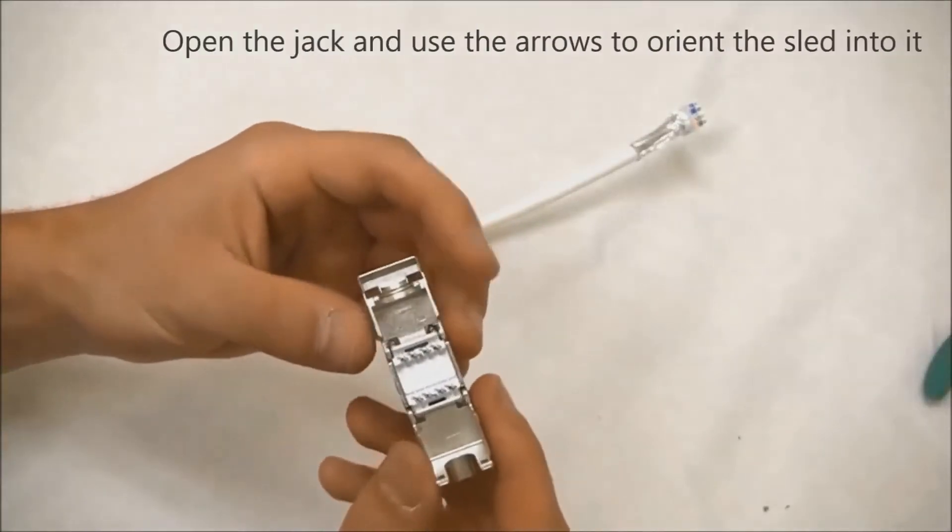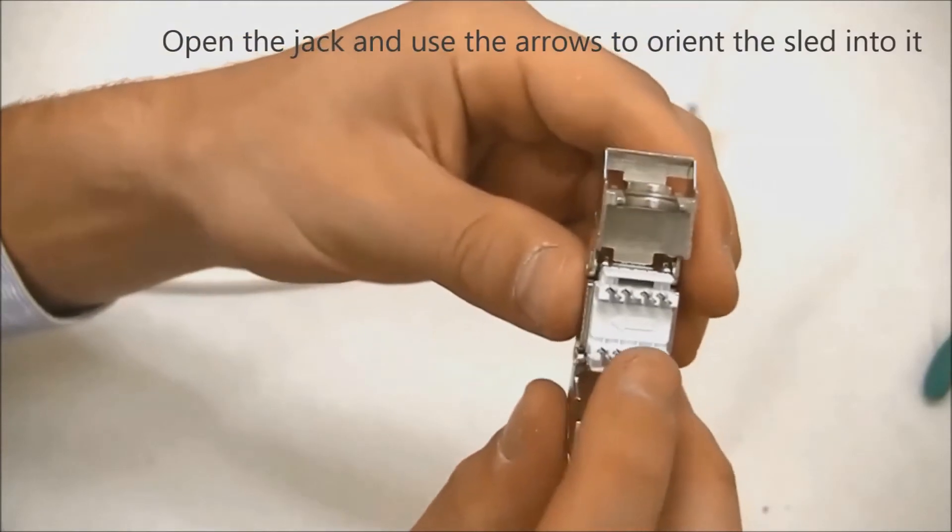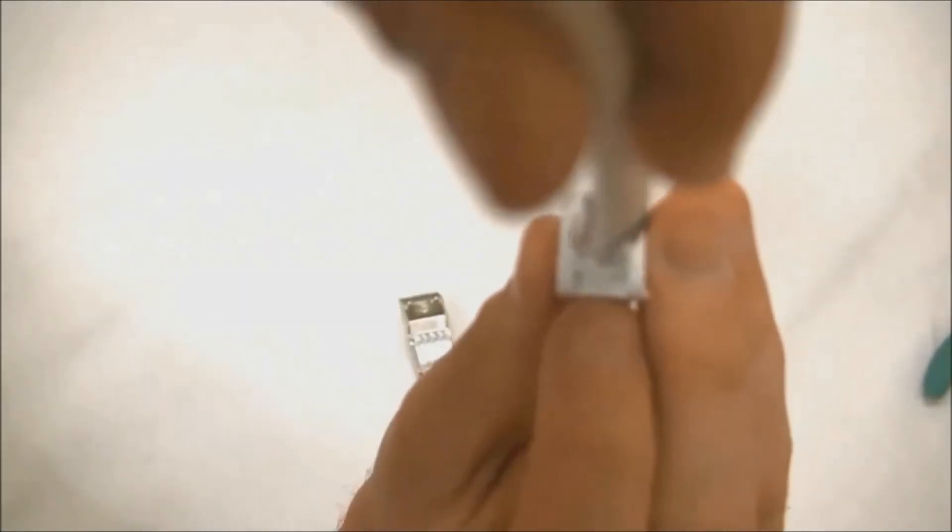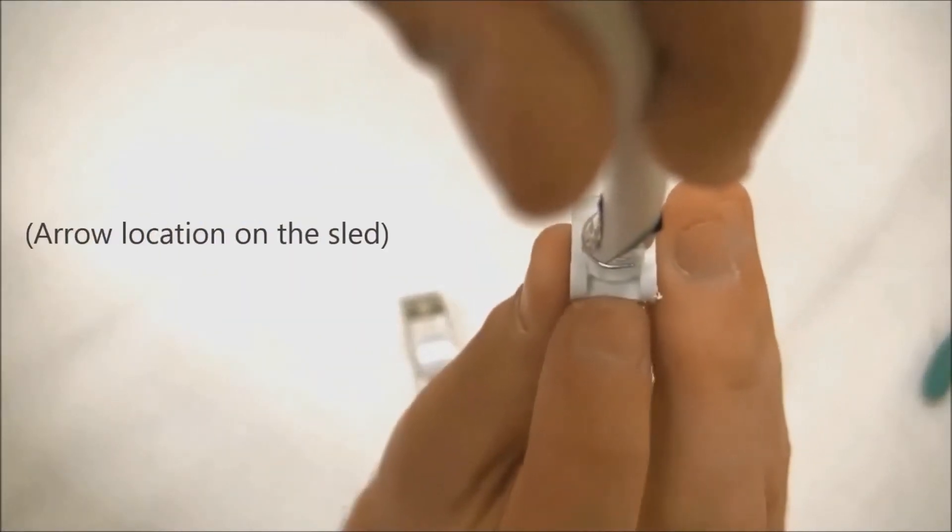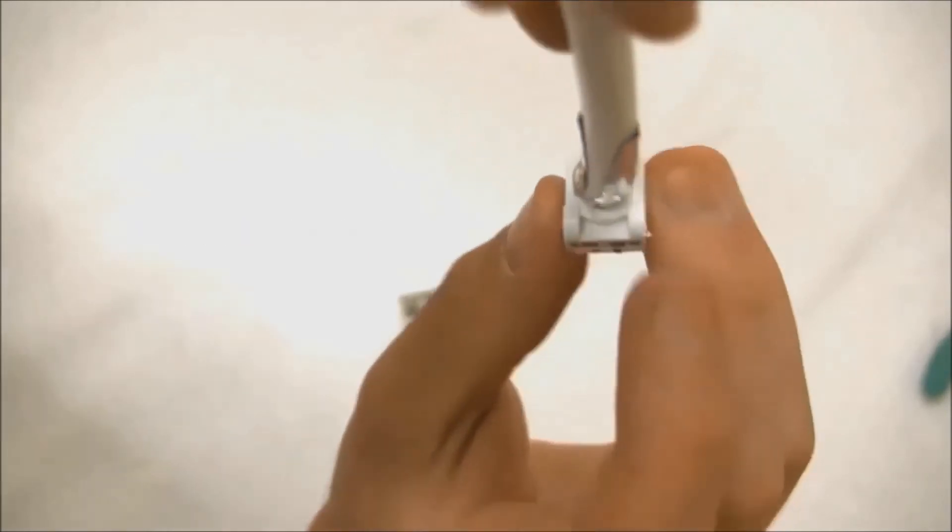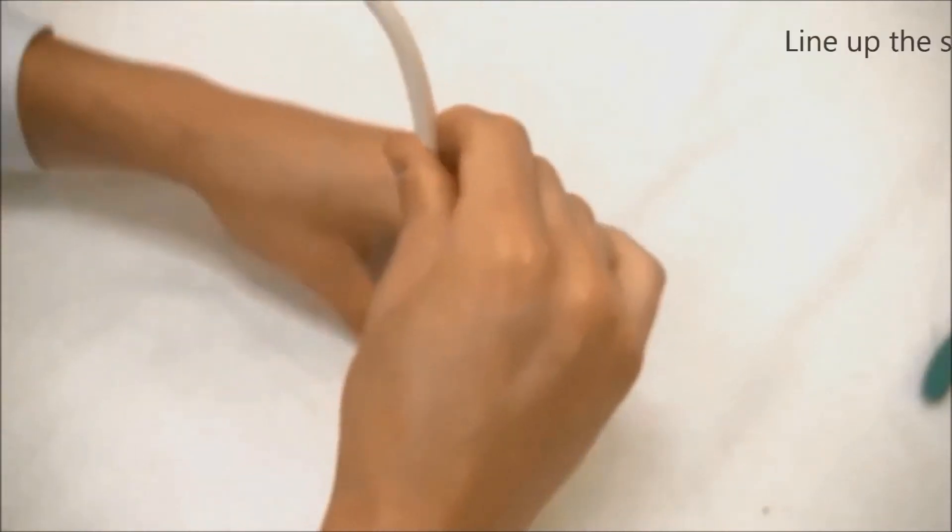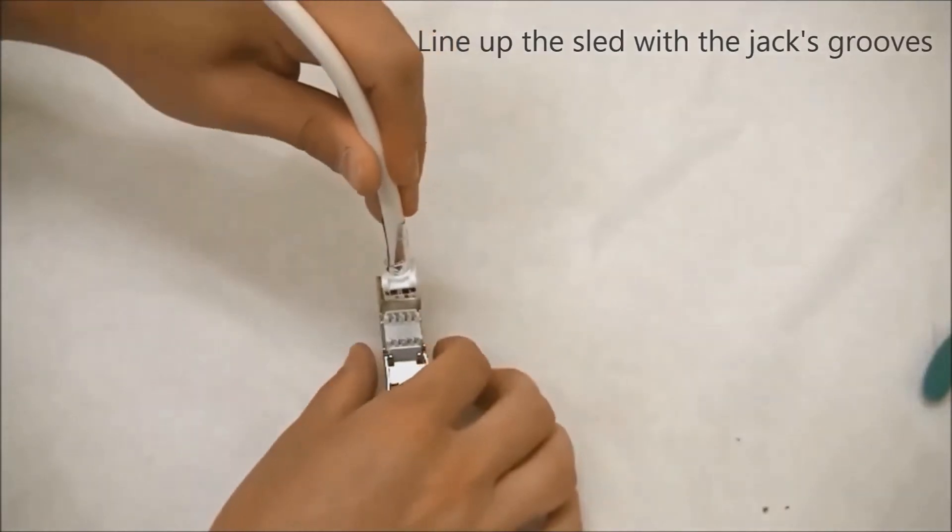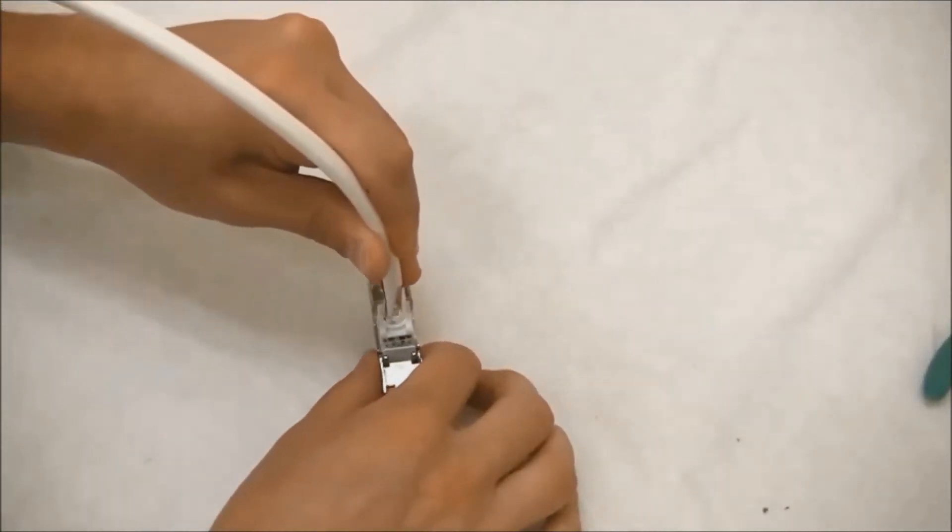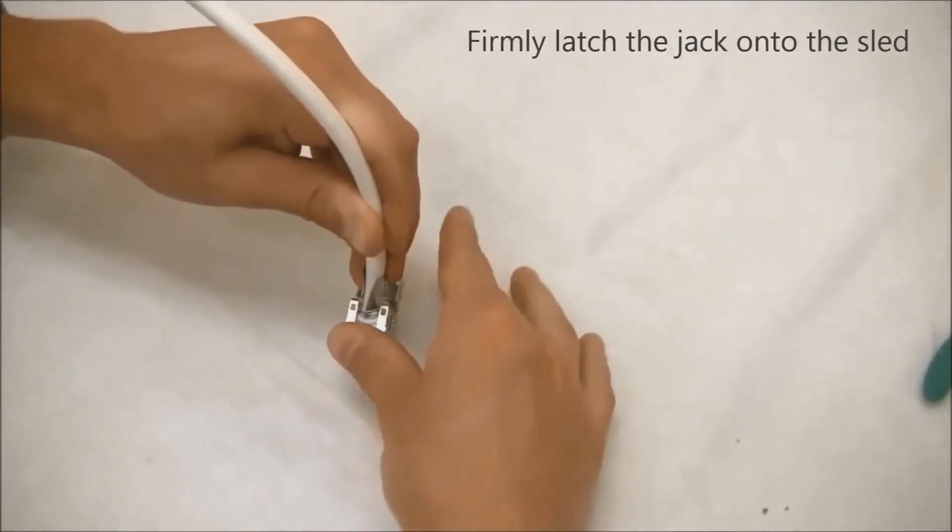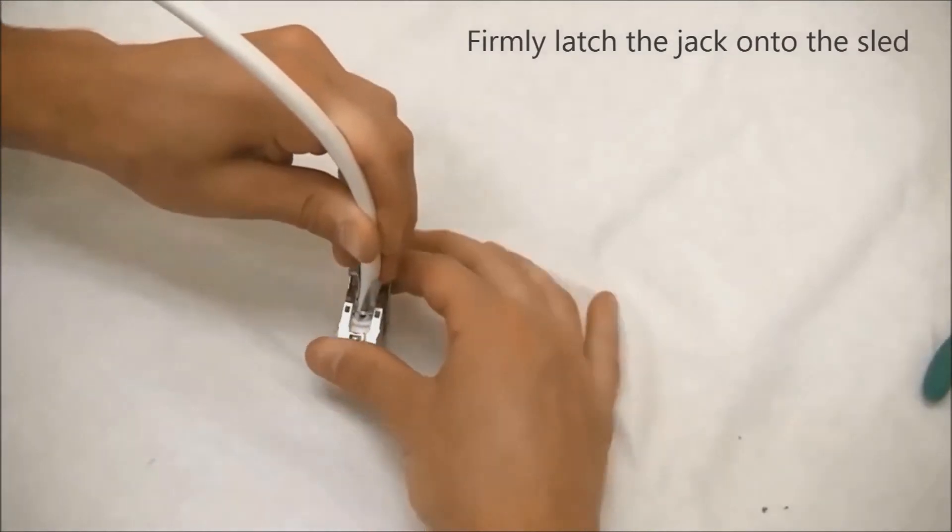Then, open up the jack and orient the sled into it using the arrows on the sled and jack itself. Line up the sled and place it into the grooves of the jack. Latch the jack onto the sled and close tightly, completing the termination.